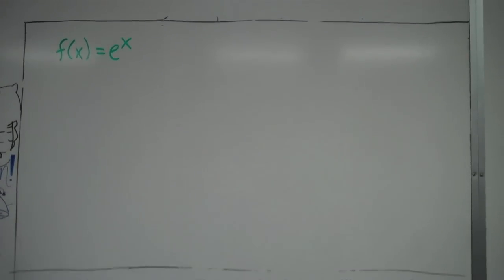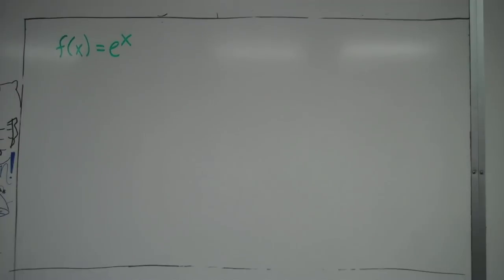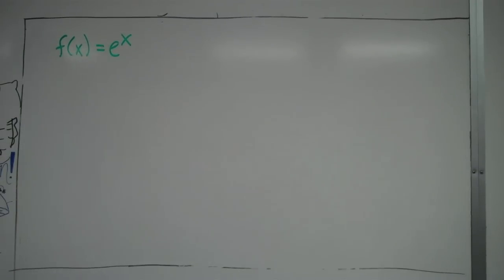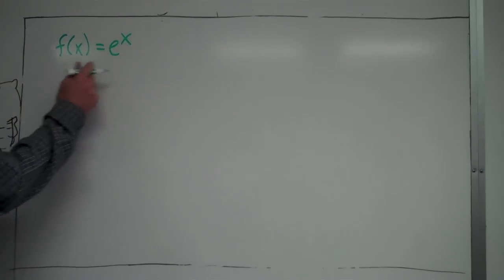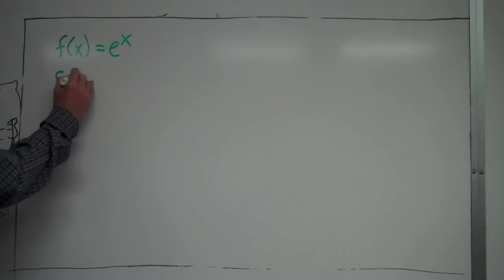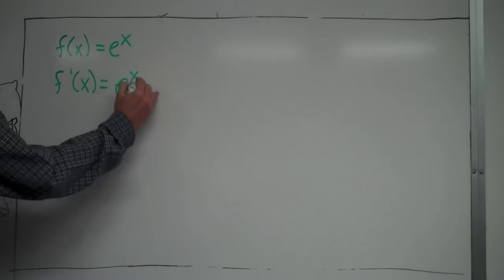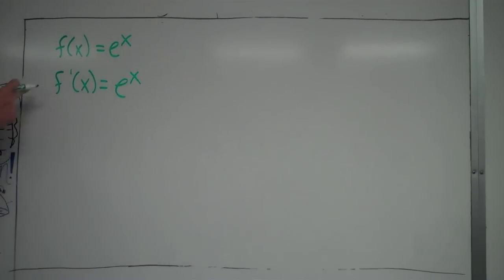We're going to take a look at finding the derivative of e to the x. It is definitely the easiest derivative to remember, since the derivative of e to the x is actually just e to the x. Again, the derivative of e to the x is e to the x.